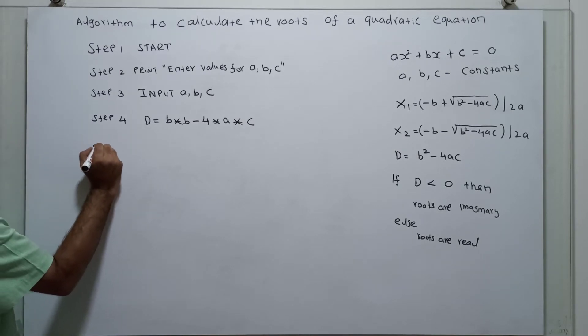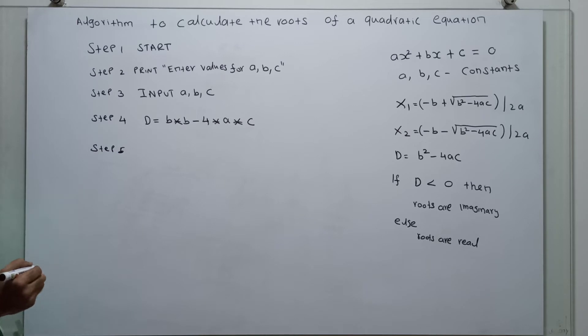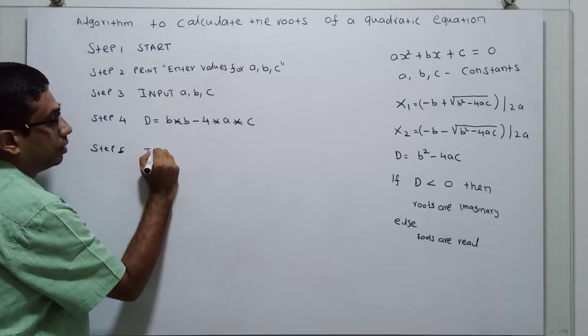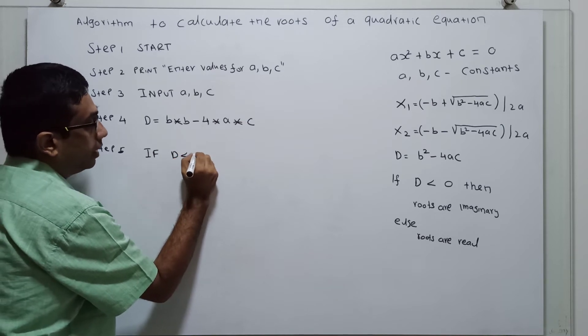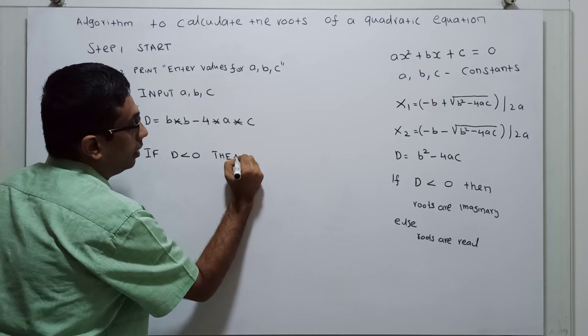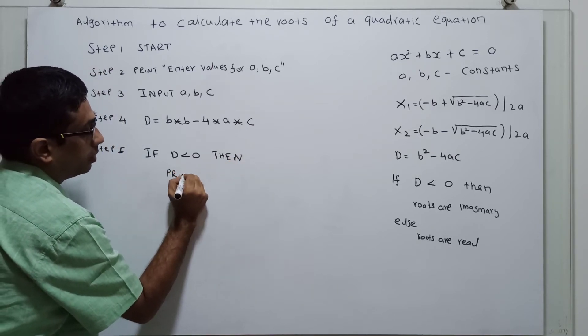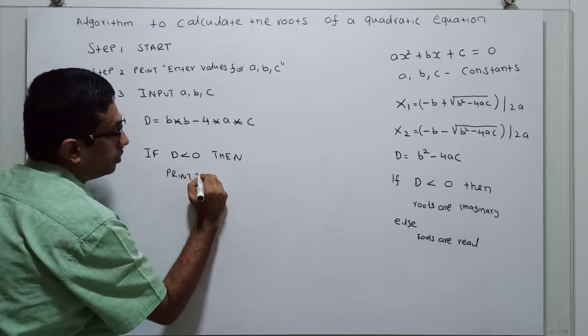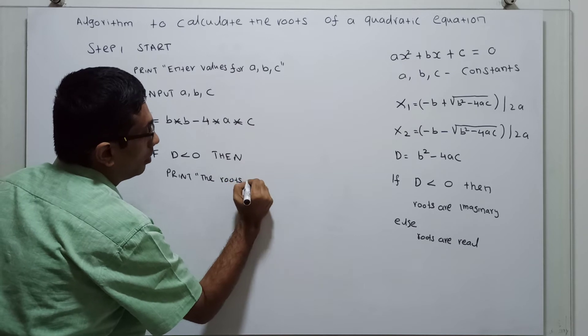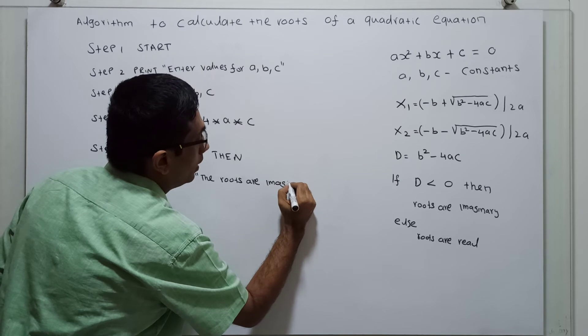Now, we have to check the discriminant value d. If d is less than 0, then print the roots are imaginary.